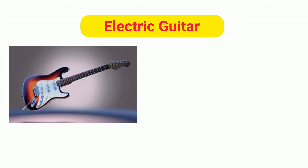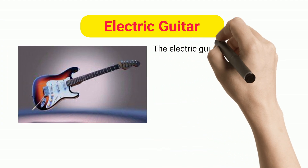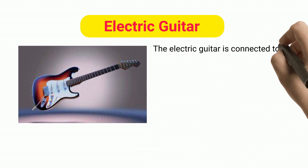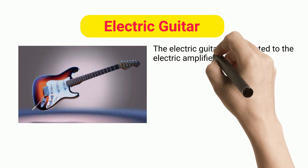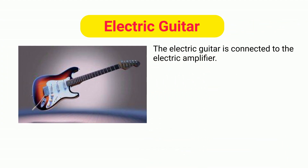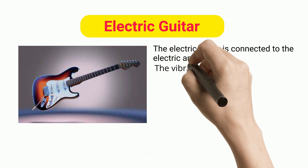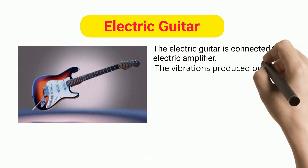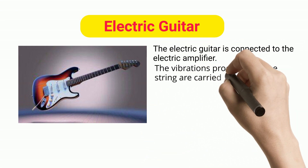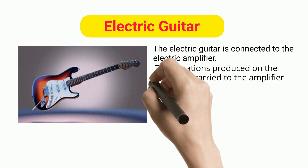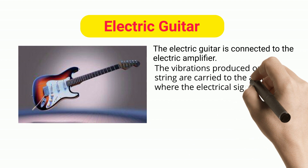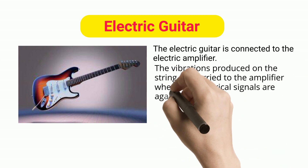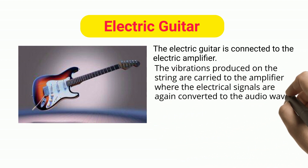Electric guitar. The electric guitar is connected to the electric amplifier. The vibrations produced on the string are carried to the amplifier where the electrical signals are again converted to the audio waves.